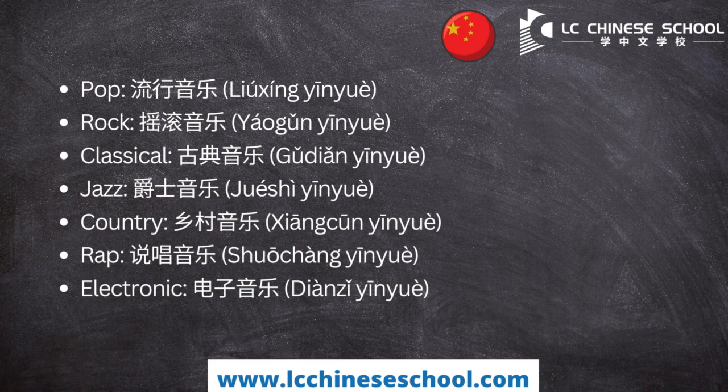摇滚音乐 (yáogǔn yīnyuè), it means rock. 古典音乐 (gǔdiǎn yīnyuè), it means classical. 爵士音乐 (juéshì yīnyuè), it means jazz. 乡村音乐 (xiāngcūn yīnyuè), it means country.